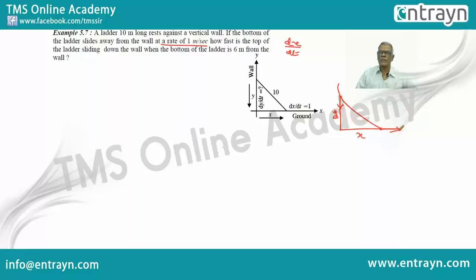If X moves at the rate of 1 meter per second, how fast is the top of the ladder sliding down from the wall? So dx/dt is 1 meter per second, and we are asked to find dy/dt.